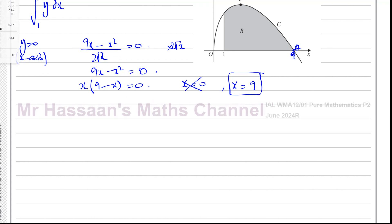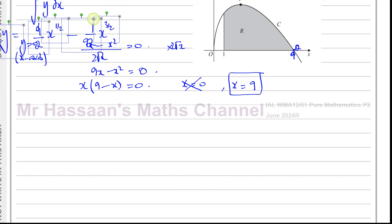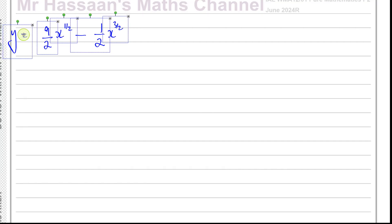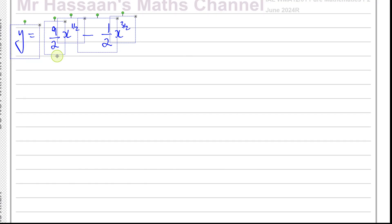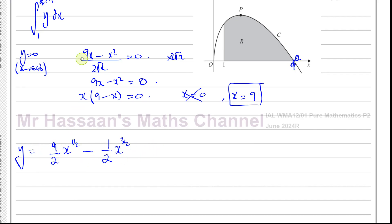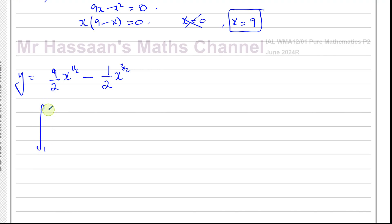Now I need to integrate the expression. I already have y written as 9 over 2 x to the power of a half minus 1 over 2 x to the power of 3 over 2, which is ready to be integrated. So I want to find the integral between 1 and 9 of 9 over 2 x to the power of a half minus 1 over 2 x to the power of 3 over 2 with respect to x.